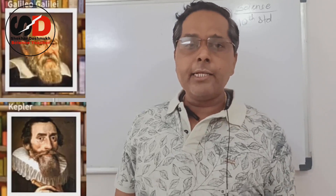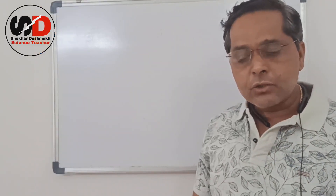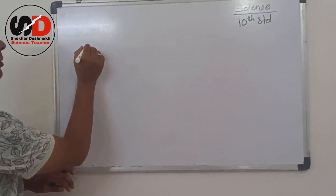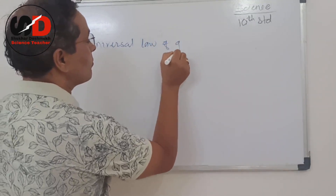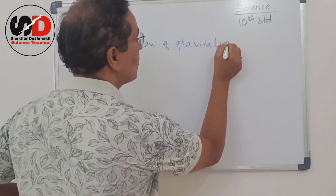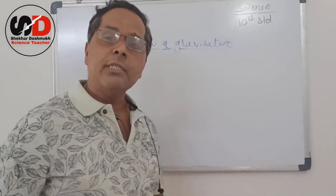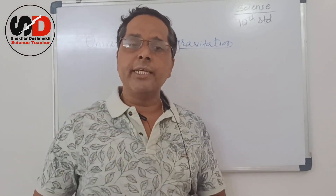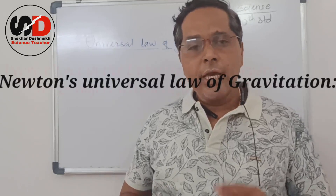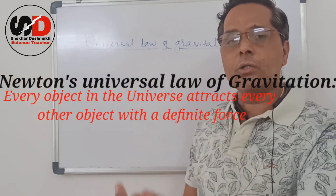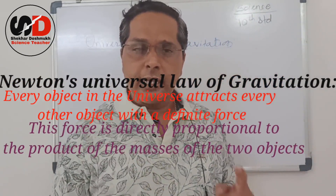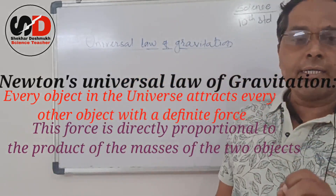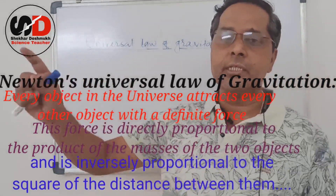He studied Galileo and Kepler and came up with what is called the Universal Law of Gravitation. Every object attracts every other object in the universe with a definite force. That force is directly proportional to the product of their masses and inversely proportional to the square of the distance between them.